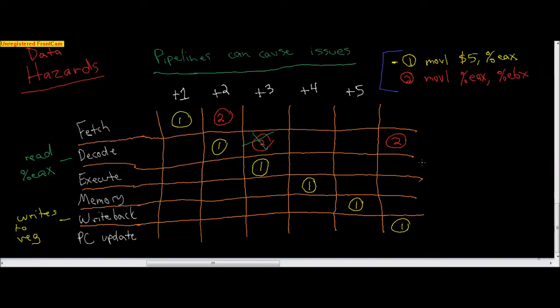And if you notice, one of the solutions that we had in class was to insert three NOPs. But this should make sense. All you're doing is stalling your pipeline so that the first instruction can write to the register before the second instruction reads that register. If you don't have these NOPs here, then you're going to have a data hazard.